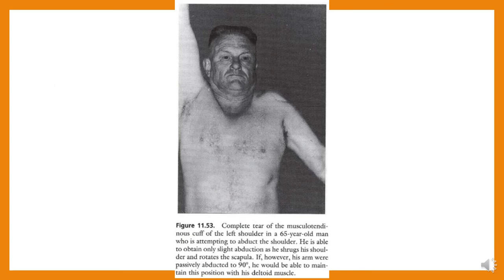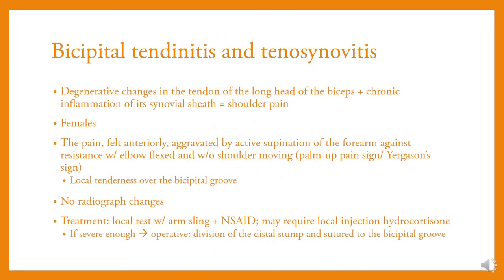Bicipital tendinitis: degenerative changes in the tendon of the long head of the biceps with chronic inflammation of its synovial sheath, resulting in shoulder pain. More common in females. The pain is felt anteriorly, aggravated by active supination of the forearm against resistance with the elbow flexed and shoulder still. No radiographic changes. Treatment includes local rest with arm sling, NSAIDs, and may require local injection of hydrocortisone.